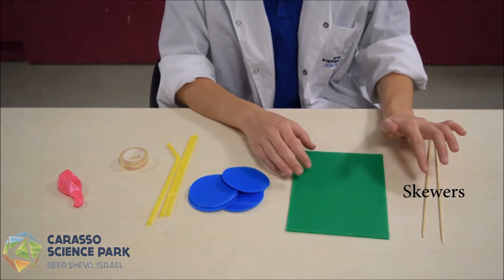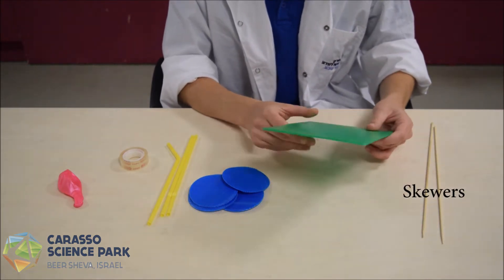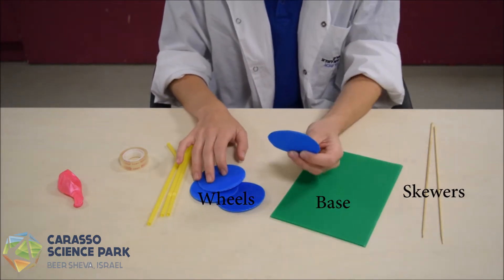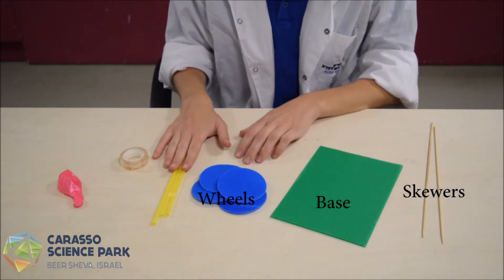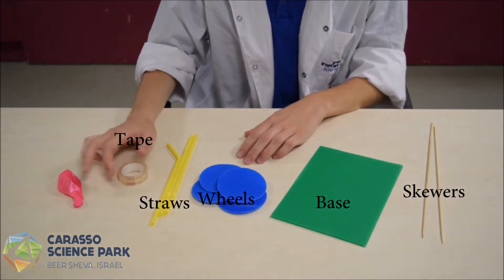We'll need two skewers, a sheet of corrugated plastic, four wheels also plastic, three straws, scotch tape, and a balloon.